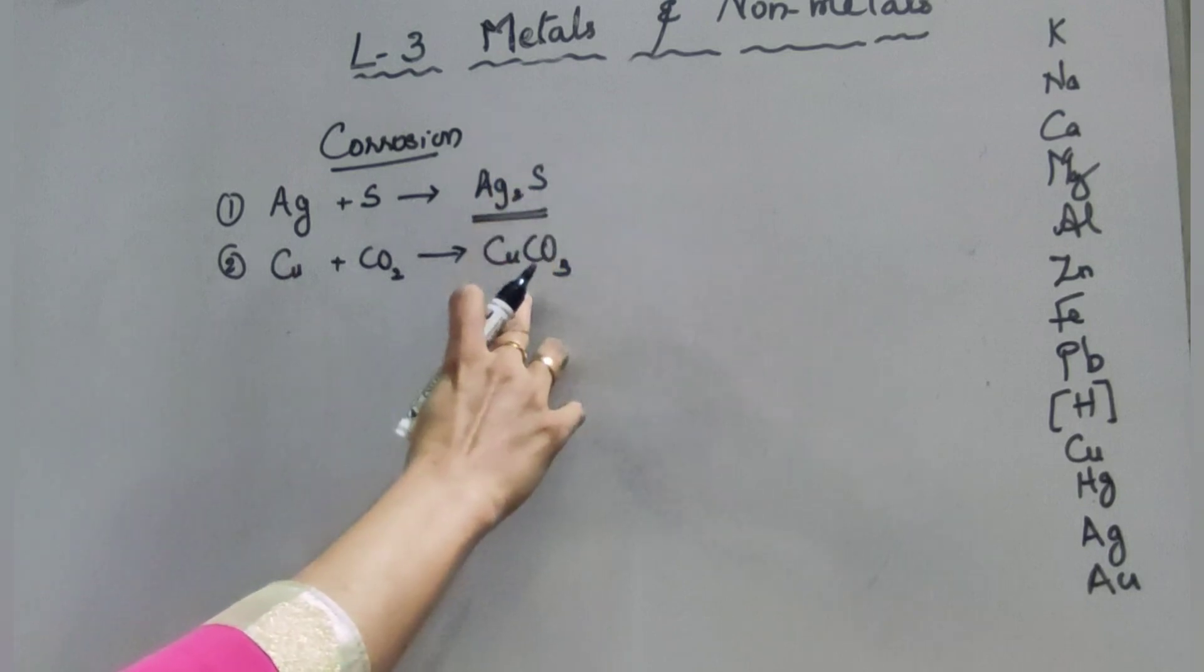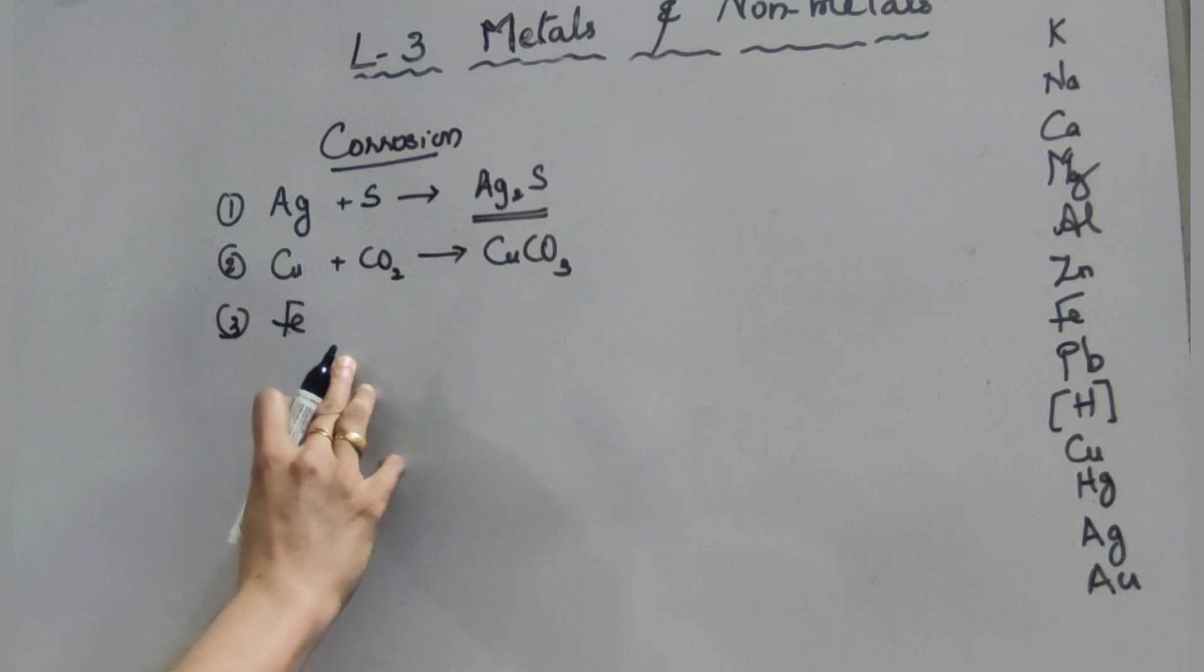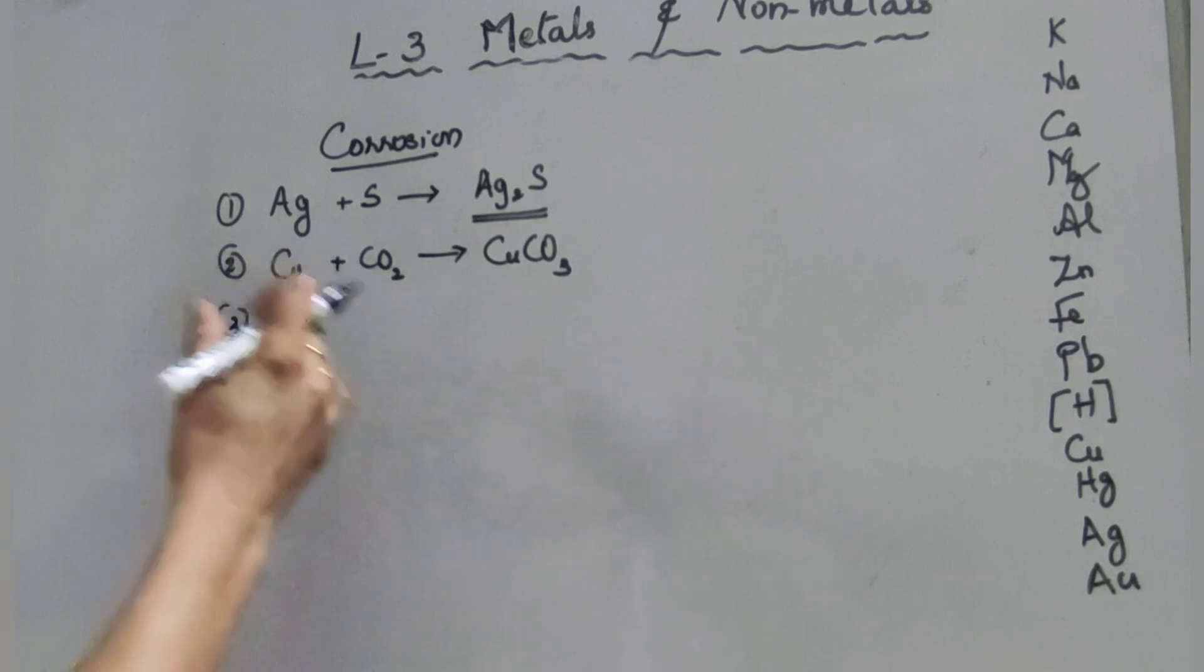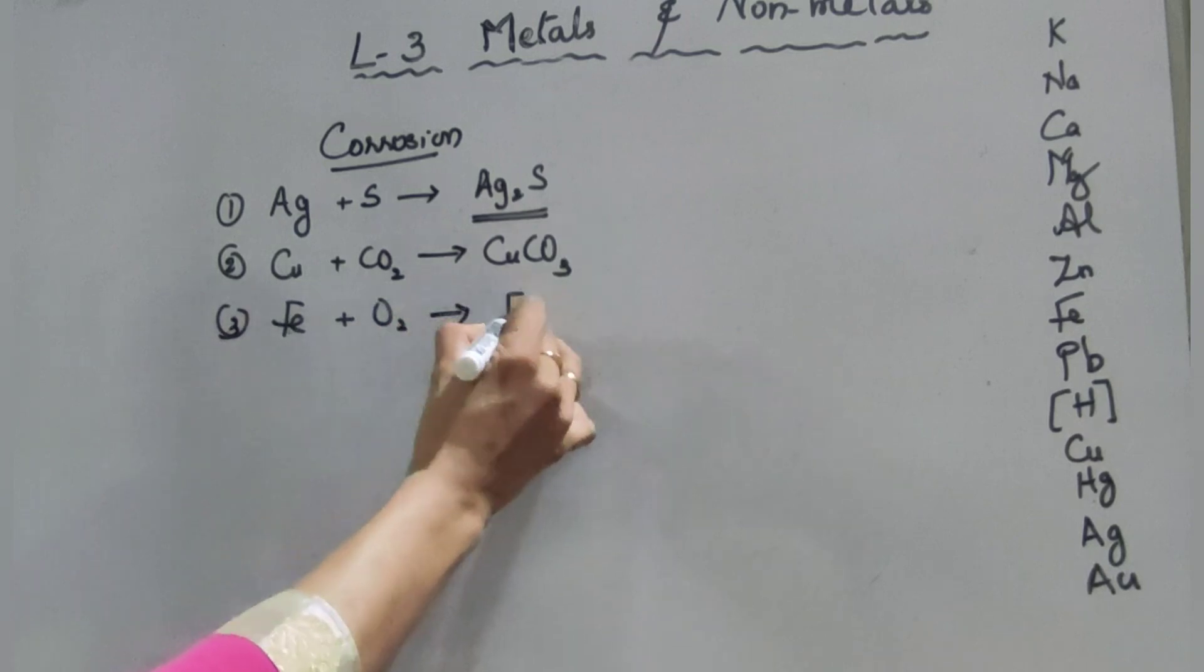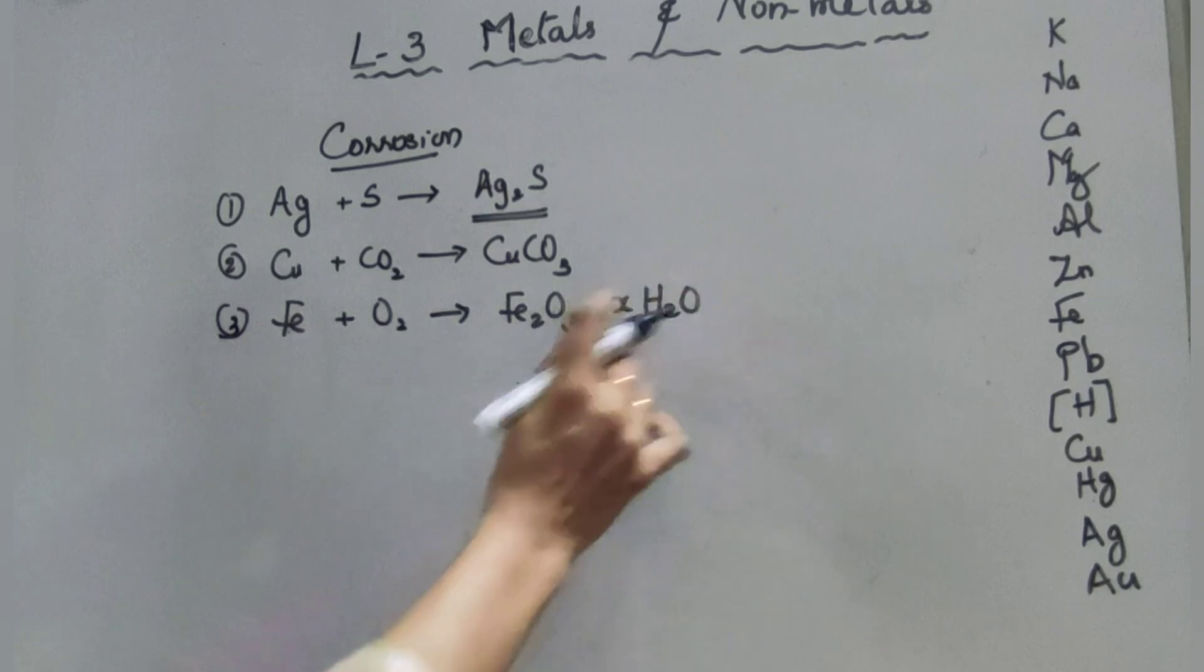And third case, it is in the case of iron. We already know that when iron is exposed to moist air for a long time, it acquires a brown flaky substance that is known as rust. So iron reacts with oxygen, we get Fe2O3·xH2O. This is the rust, brown color.